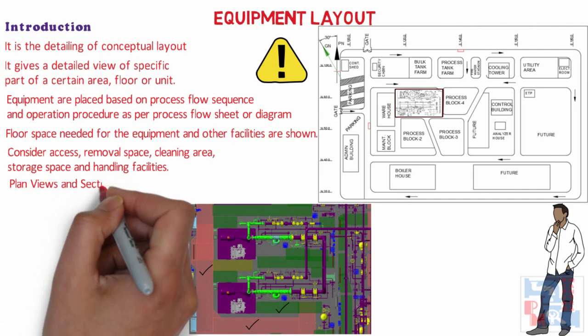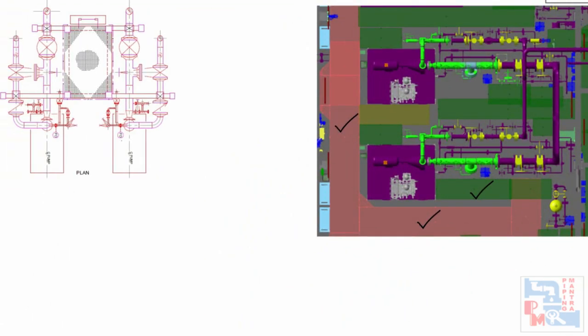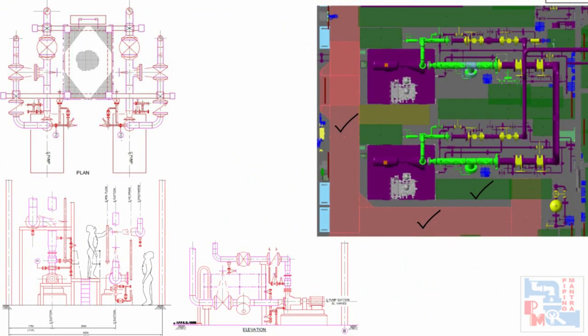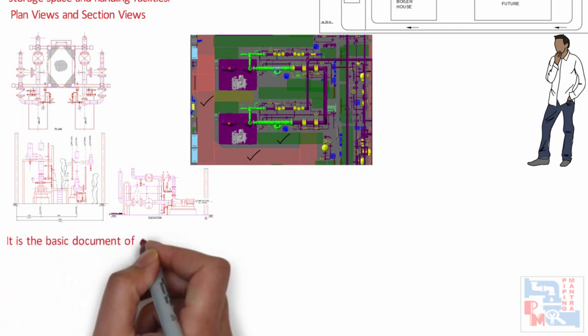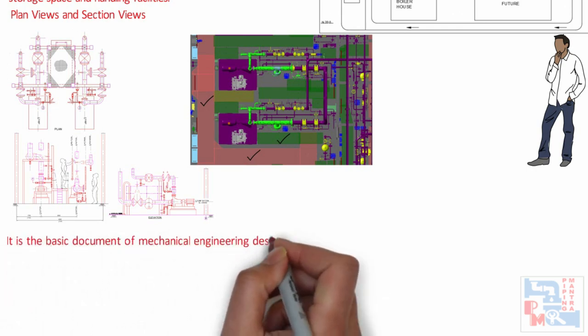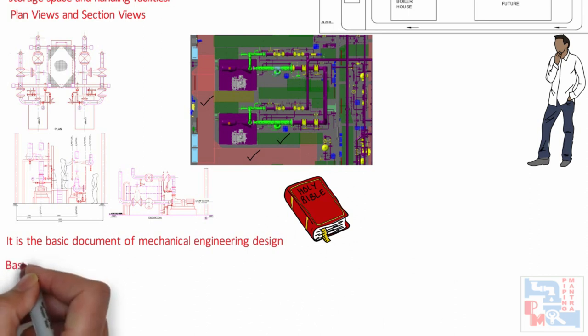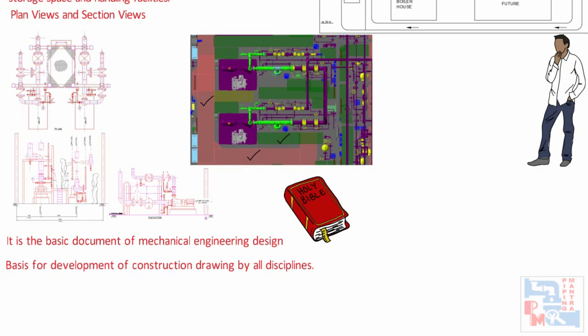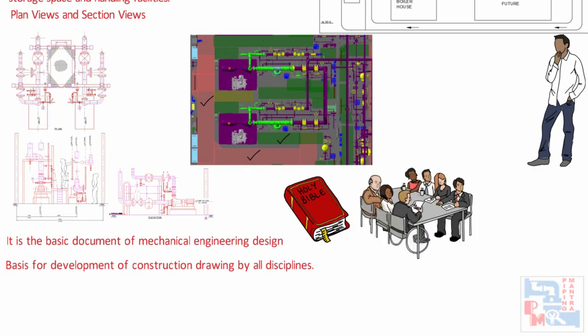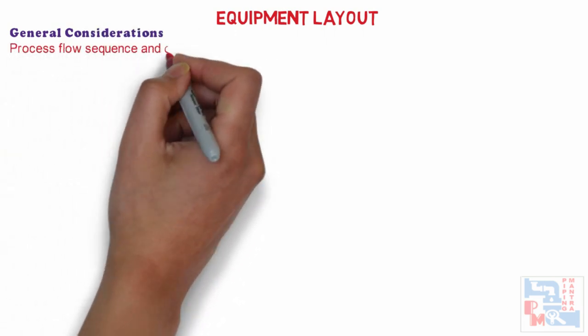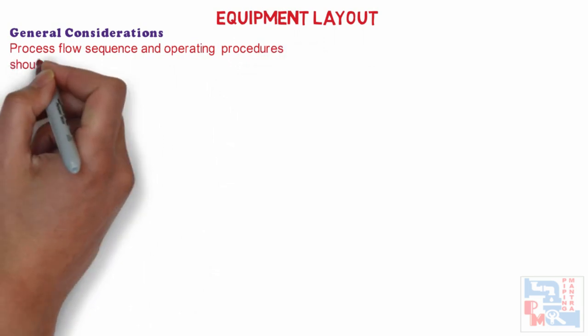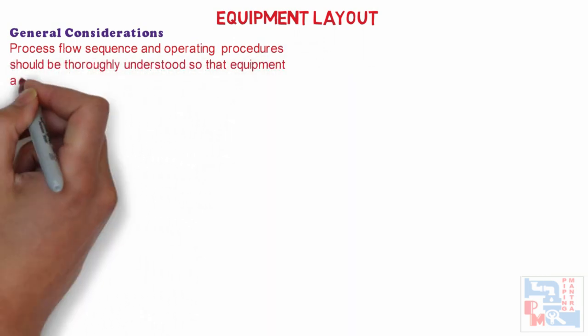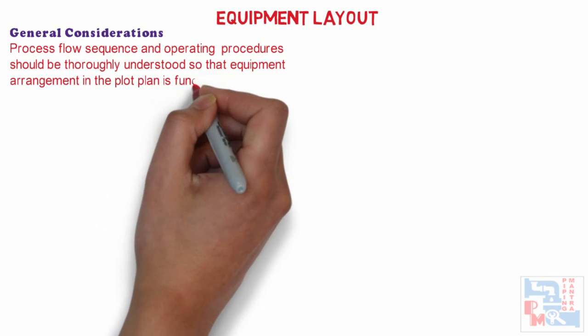Equipment Layout consists of a Plan View and Section View. It is the basic document of Mechanical Engineering Design and it is the basis for development of construction drawings by all disciplines. Now let's see all the considerations we have to take while developing an Equipment Layout. General considerations are: process flow sequence and operating procedures should be thoroughly understood so that equipment arrangement in the Plot Plan is fully functional according to operation.